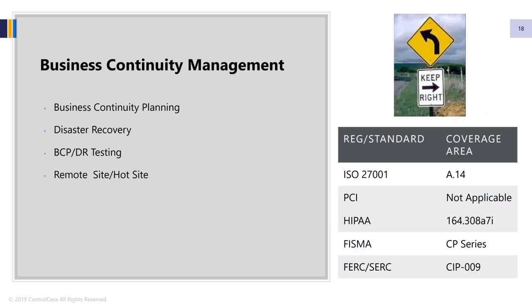Business continuity management is another very important aspect of continuous compliance. As technologies change, environments change, and geopolitical conditions change, it is important to have a plan so that things do not derail business — whether at the system level, people level, or the process level. Having a plan and testing it on an ongoing basis is an important part of continuous compliance, and again, most IT compliance regulations require business continuity planning.